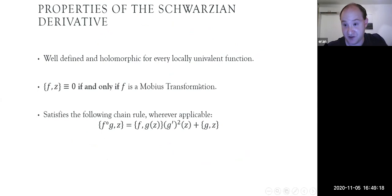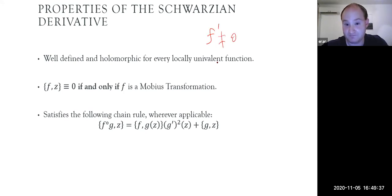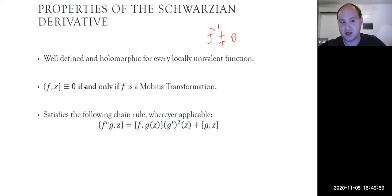We need some classical properties of the Schwarzian derivative. The first is that it is well-defined and holomorphic for every locally univalent function — easy to prove, since whenever you have a locally univalent function its first derivative is always non-zero. The second property is that it vanishes identically precisely for the Möbius transformations: the Schwarzian derivative is identically zero if and only if f is a Möbius transformation. In some sense, the Schwarzian derivative is a conformal invariant telling you whether a mapping is a Möbius transformation or not.